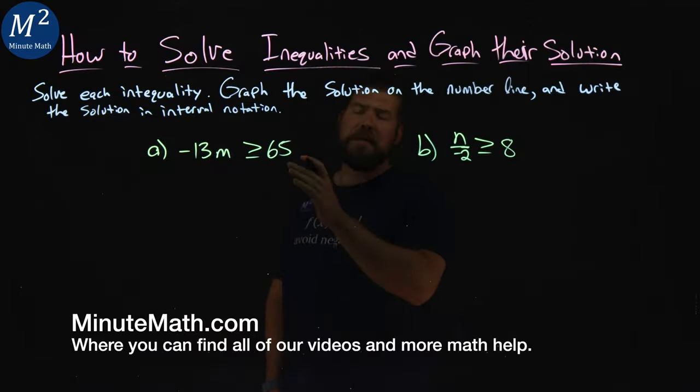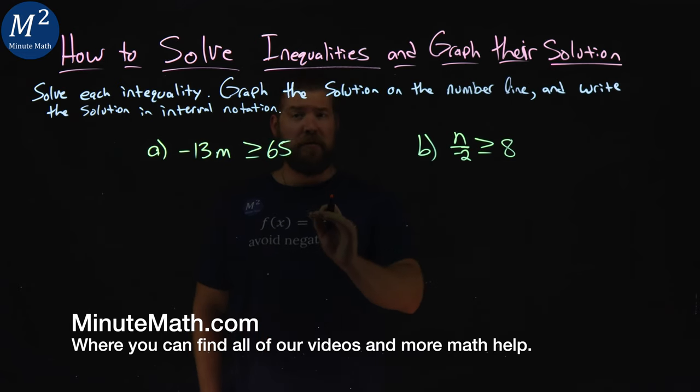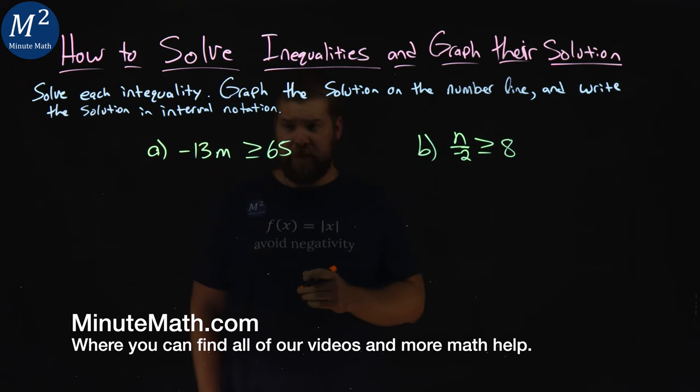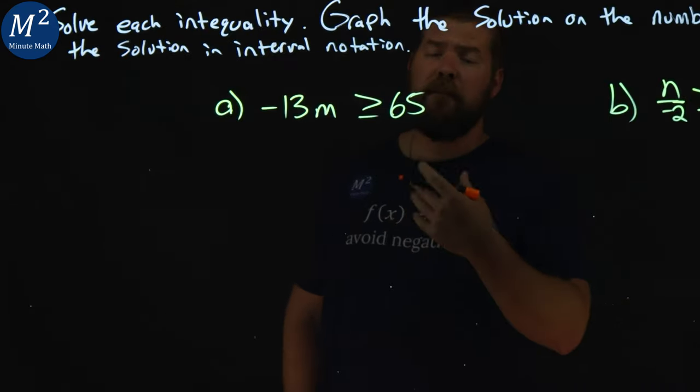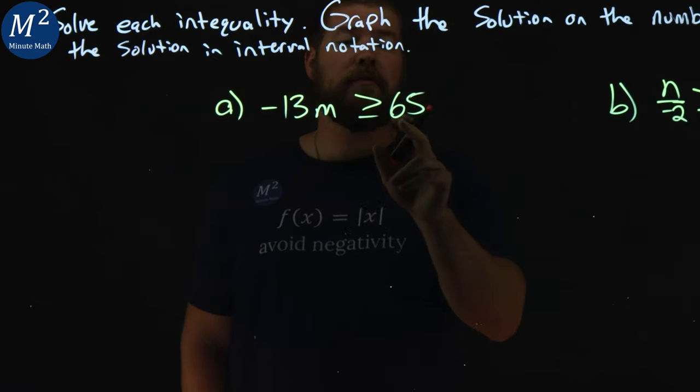We're given two examples here. We want to solve each inequality, graph the solution on the number line, and write the solution in interval notation. Let's start with our first example here: negative 13m is greater than or equal to 65.